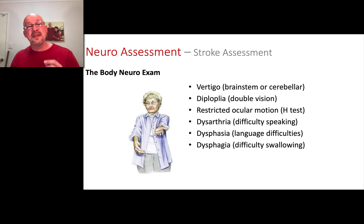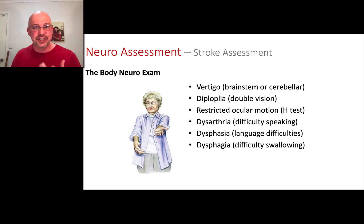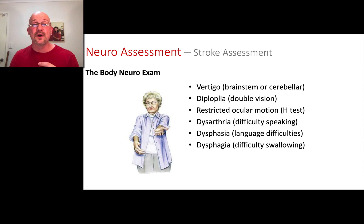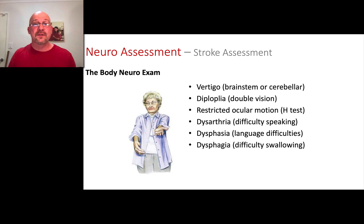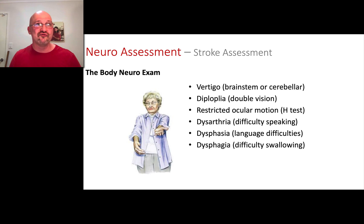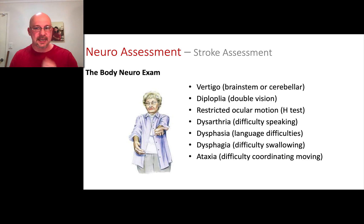So there are the three dyses. Dysphagia — G for gulping — is difficulty swallowing. Dysarthria — S for speaking — is difficulty producing speech. And the ability to actually articulate the words is what we assess when we ask them to speak, to cough, and to swallow during the cranial nerve exam. If they're having trouble with any of that, in your head you think: the brain's not okay.